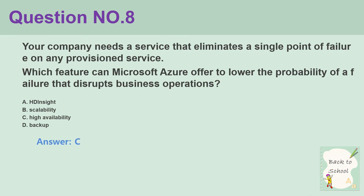Question number 8. Your company needs a service that eliminates a single point of failure on any provisioned service. Which feature can Microsoft Azure offer to lower the probability of a failure that disrupts business operations? A. HDInsight. B. Scalability. C. High availability. D. Backup. Answer: C.